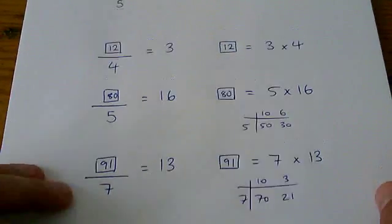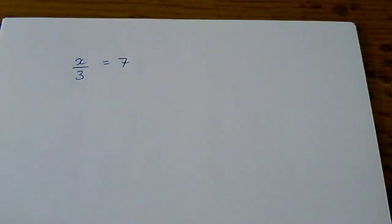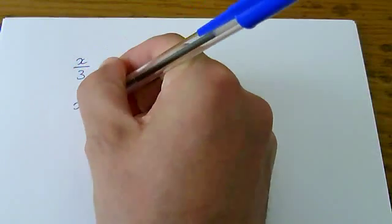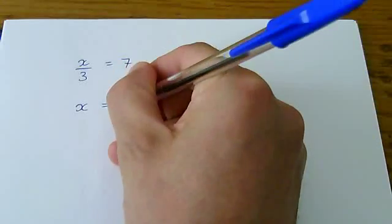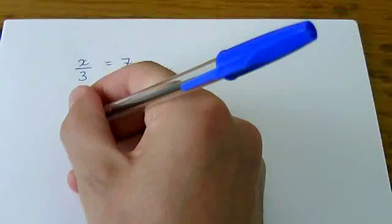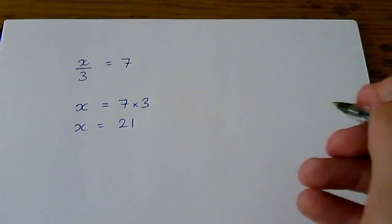Let's have a look at what happens when we turn those boxes into x's. So here is an example: x divided by 3 equals 7. How do we rewrite that using a multiplication? Well, the x is just like the box, and we can rewrite straight underneath: x equals 7 times 3. And 7 times 3 is just 21. That's the answer.